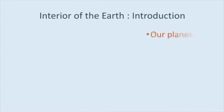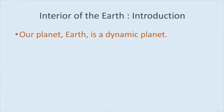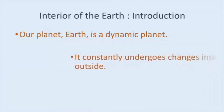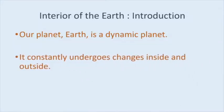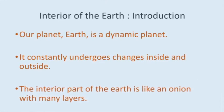As we all know, earth is the only planet in the solar system which has life on it. Not only this, earth is also a dynamic planet. It is undergoing changes inside and outside constantly. This chapter focuses on the interior of the earth and what it is made up of, which is like an onion with many layers.